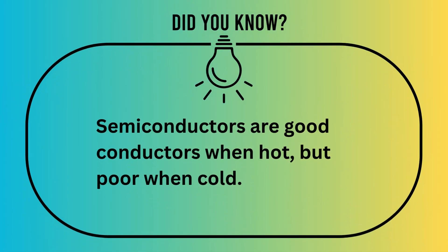Did you know semiconductors are good conductors when hot, but poor conductors when cold? Semiconductors change how well they conduct electricity based on their temperature. When hot, they are good conductors and electricity flows easily. When cold, they are poor conductors and electricity flows with difficulty. For example, silicon is used in computers — when the computer gets warm, the silicon helps electricity flow better, making the computer work faster.